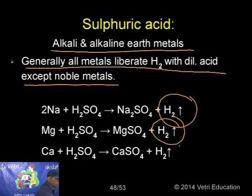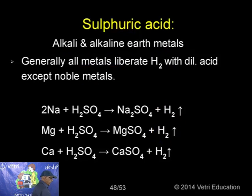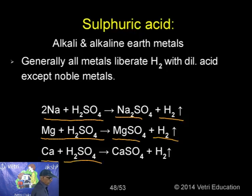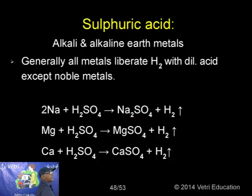The chemical reactions of sulphuric acid are due to four characteristics: low volatility, strong acidic character, strong affinity for water, and ability to act as an oxidizing agent. For action with metals, dilute sulphuric acid reacts with almost all metals except noble metals to produce hydrogen gas. For example: 2Na + H₂SO₄ → Na₂SO₄ + H₂; Mg + H₂SO₄ → MgSO₄ + H₂; Ca + H₂SO₄ → CaSO₄ + H₂.